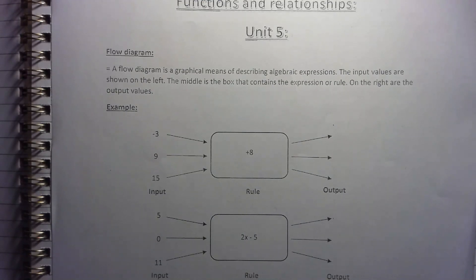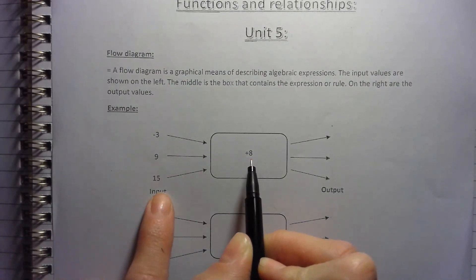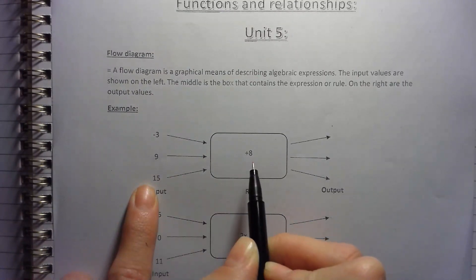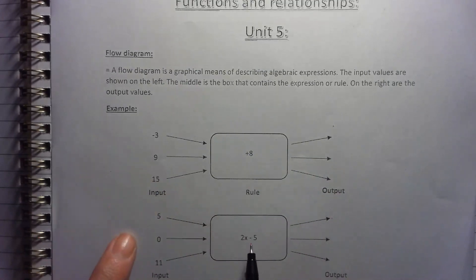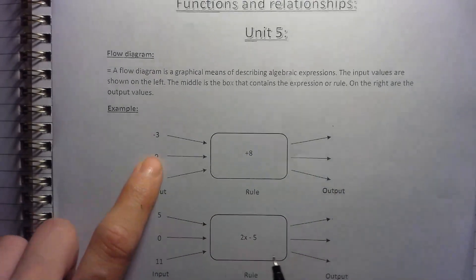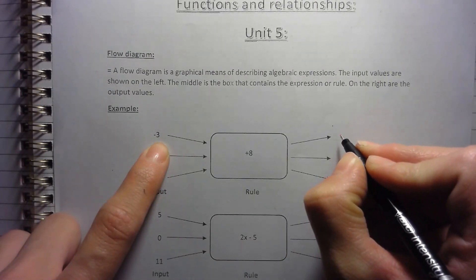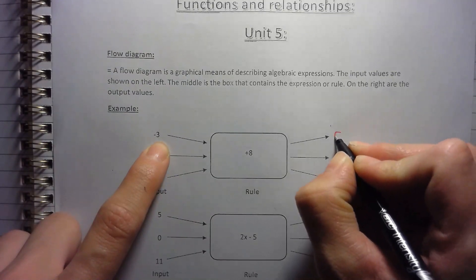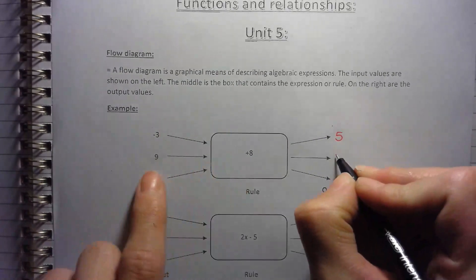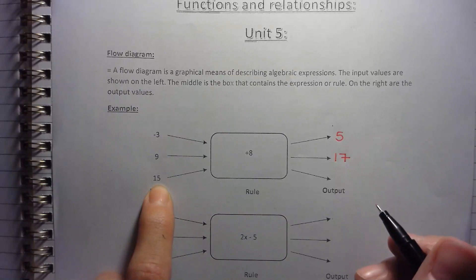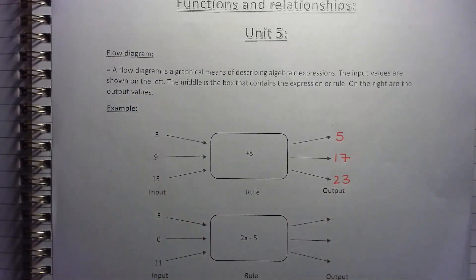So we're putting in a negative 3 and we are adding 8 to it. Then we're putting in a 9 and we're adding 8 to it. Putting in a 15 and adding 8 to it. So this isn't the algebra yet. The next one does have the X's with the numbers. Alright, so negative 3 and we're adding 8 to it. So it's like you owe me 3 Rand, but you pay me 8 Rand. I have 5 Rand extra. Then 9 plus 8 is 17. 15 plus 8 is 23.